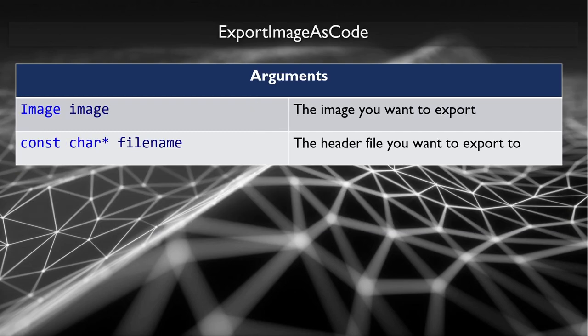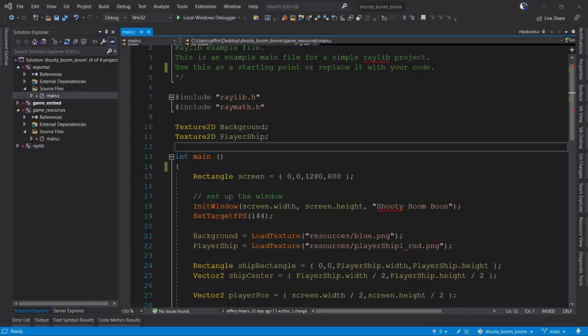Export images code is not meant to be used by your game at runtime. It is meant to be used by a tool that you write that exports all of your images out to header files. You then include those header files with your actual game at build time.